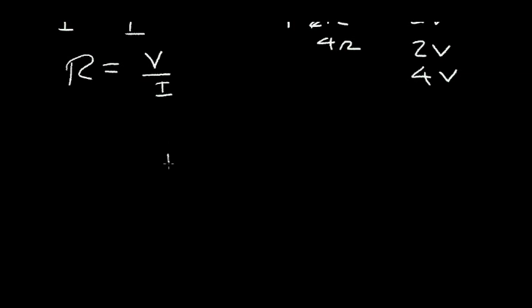If we have a resistor, say we don't know what it is, but we have an ammeter here and we measure a current. We have a voltage that we can measure across the resistor with a voltmeter.